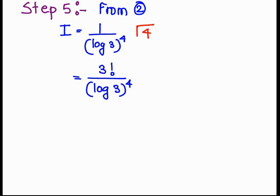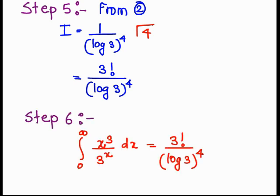So gamma 4 equals 3 factorial. Therefore, the integration from 0 to infinity of x raised to 3 upon 3 raised to x dx equals 3 factorial upon log 3 raised to 4.